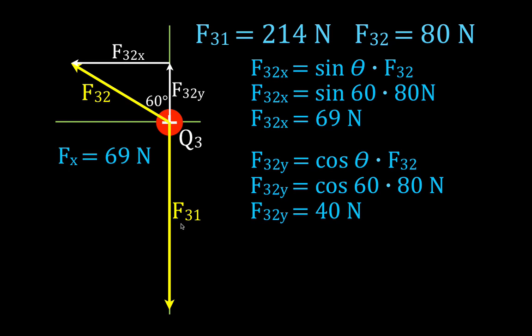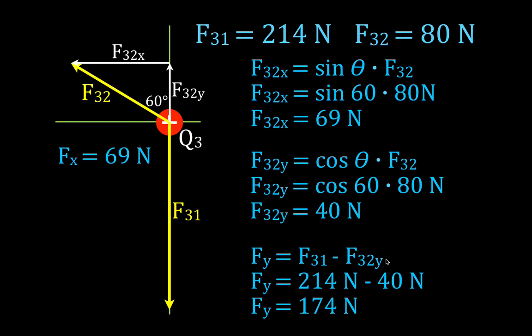And we get that total force, the resultant force in the y direction is F31 minus F32y, and that gives us 214 newtons minus 40, and that tells us that the total force acting in the y direction is 174 newtons.